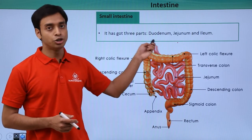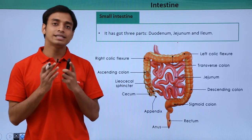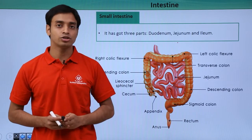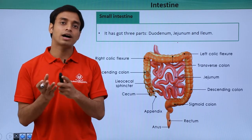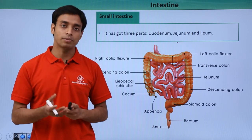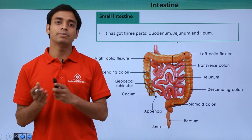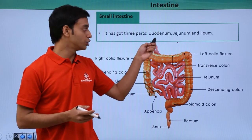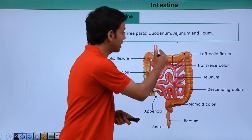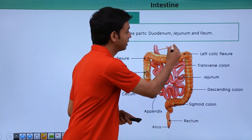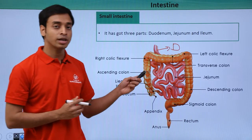The first part is known as the duodenum. The duodenum is the C-shaped structure which follows just after the stomach. The contents of the stomach are emptied into the duodenum.